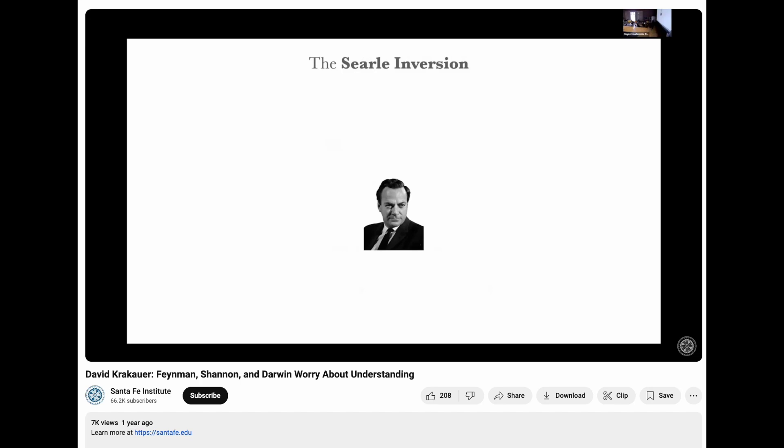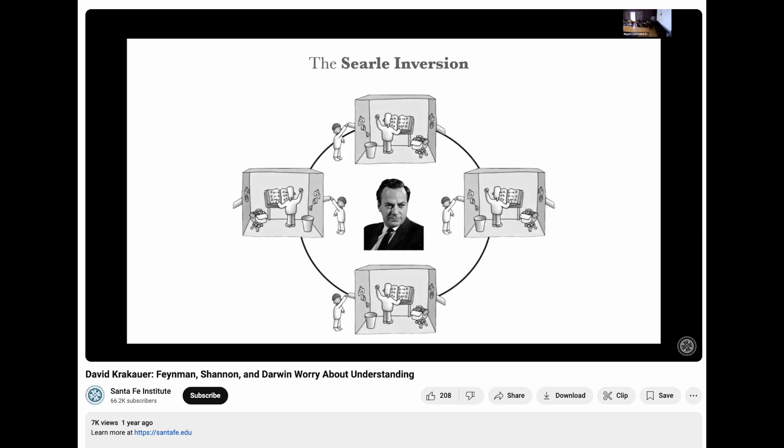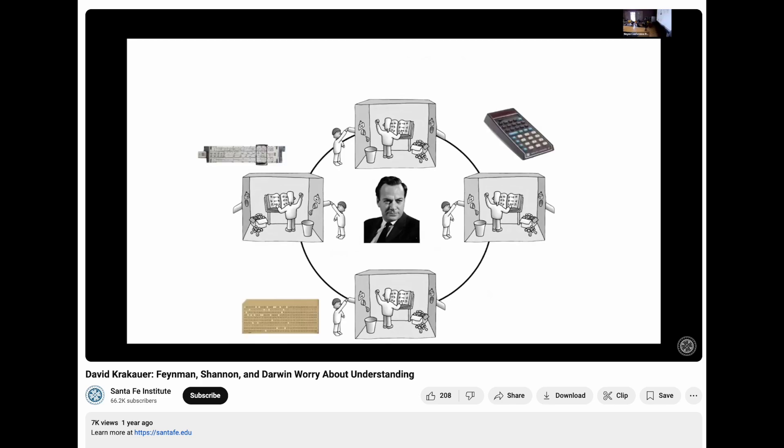And I'm going to surround Feynman with cellboxes. And what is that? Well, that's culture. Culture is the domain of the non-understood, and it's full of all of these devices and artifacts that allow someone like Feynman to do his job.